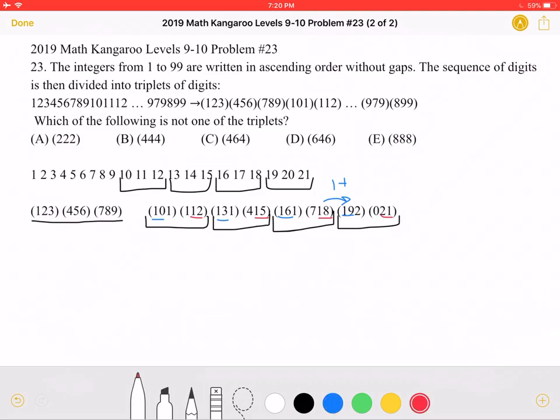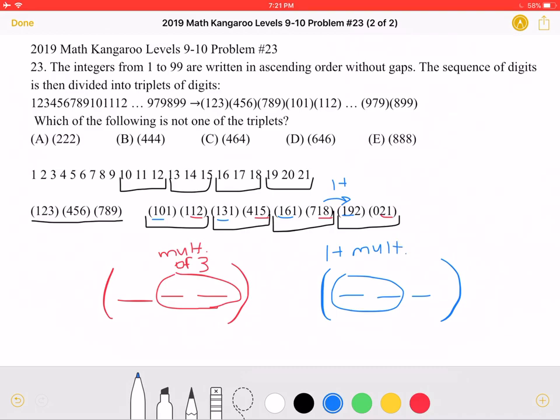Therefore, we can have 2 types of triplets. In one type, the last 2 digits are a multiple of 3. Or we can have another type of triplet where the first 2 digits are 1 more than a multiple of 3.